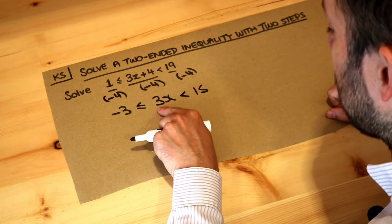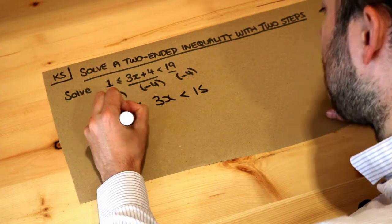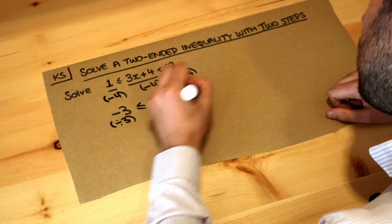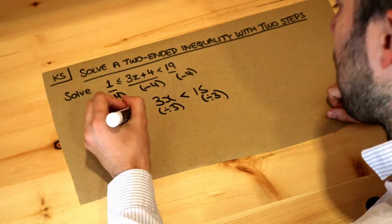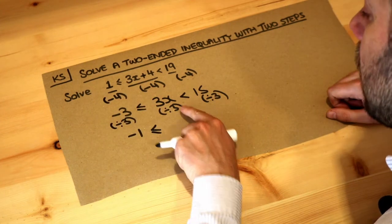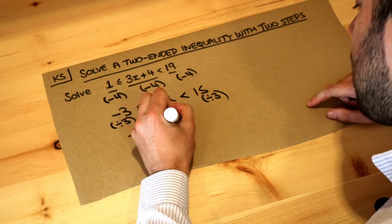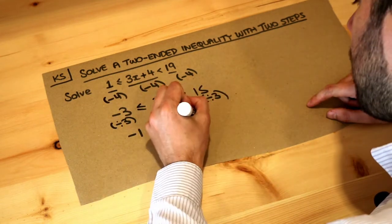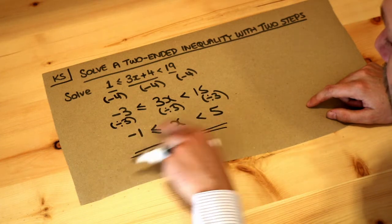Now X has been multiplied by 3 we want to get rid of that times by 3 so we divide the left the middle and the right by 3. Negative 3 divided by 3 is negative 1 less than or equal to, copy that again, dividing 3x by 3 gets rid of the times by 3 leaving just X and 15 divided by 3 is 5.